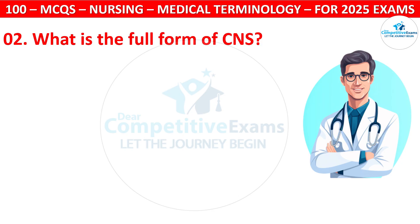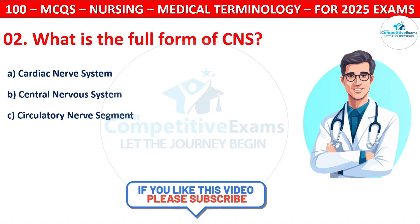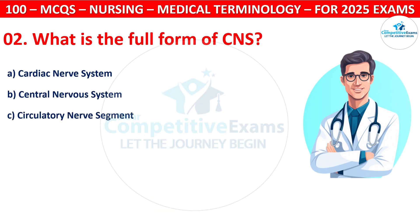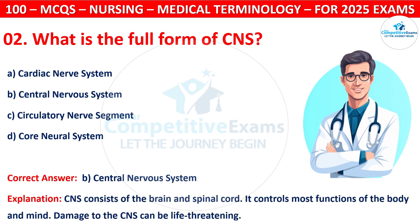Question 2: What is the full form of CNS? Options are: Cardiac Nerve System, Central Nervous System, Circulatory Nerve Segment, or Core Neural System. The correct answer is B, that is Central Nervous System. CNS consists of the brain and spinal cord. It controls most functions of the body and the mind. Damage to the CNS can be life-threatening.